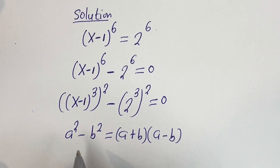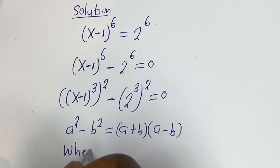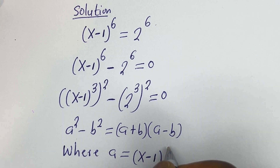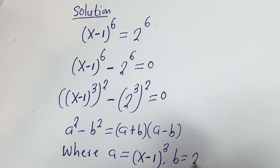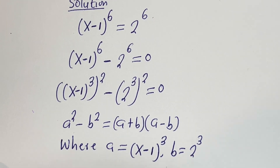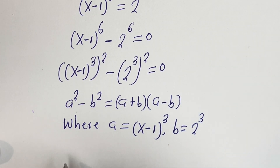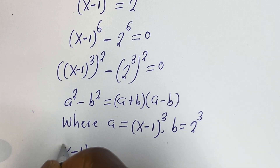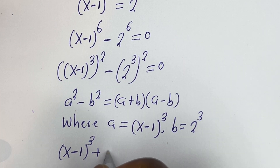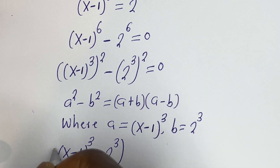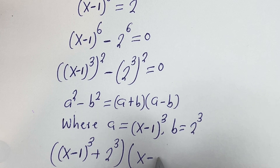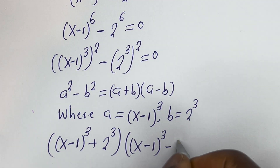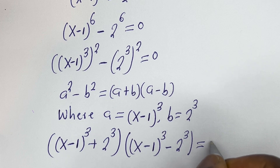Because this is in the form of a perfect square difference, where a is equal to (x minus 1) to the power of 3 and b is equal to 2 to the power of 3, this can be written as: (x minus 1)^3 plus 2^3, times (x minus 1)^3 minus 2^3, is equal to 0.